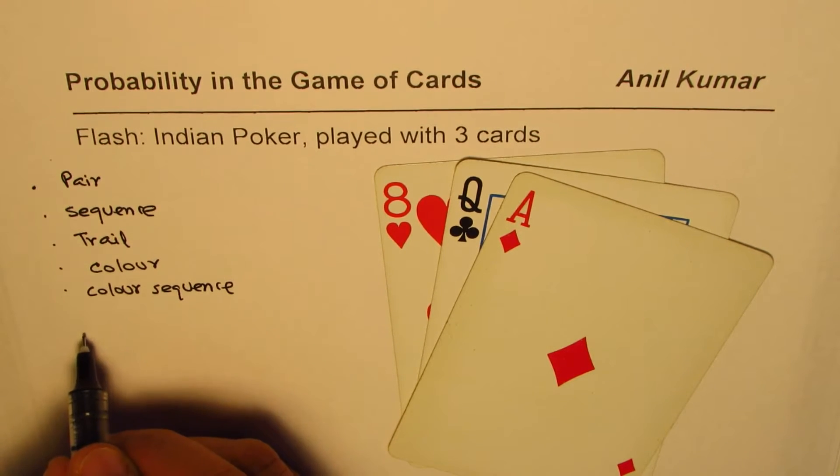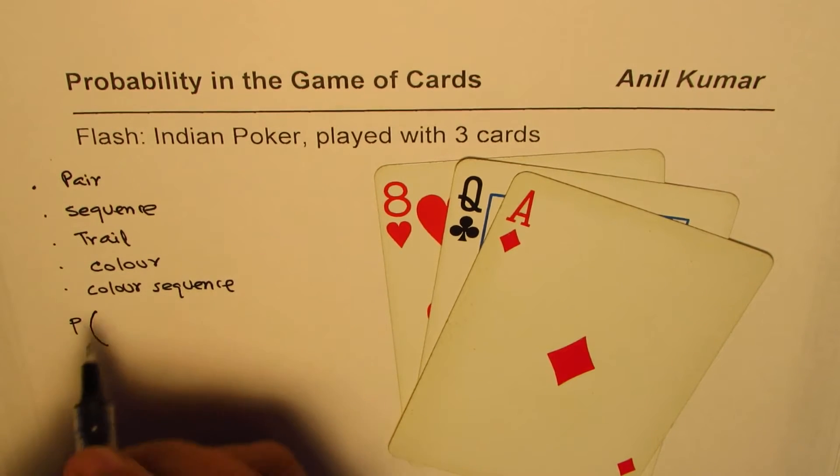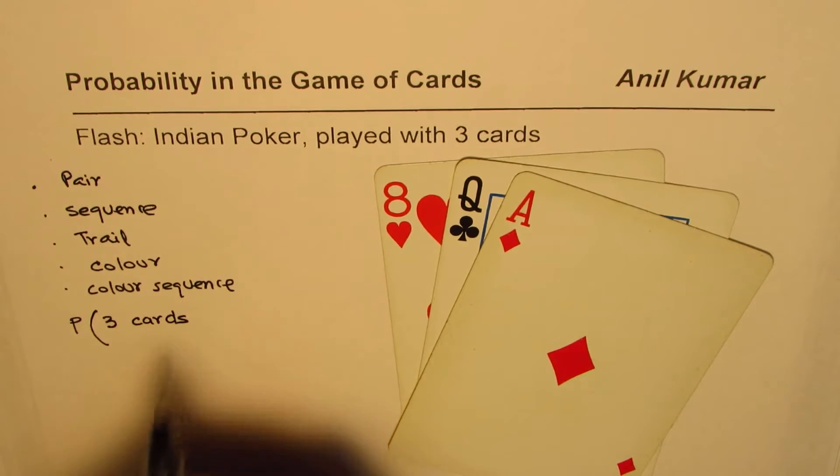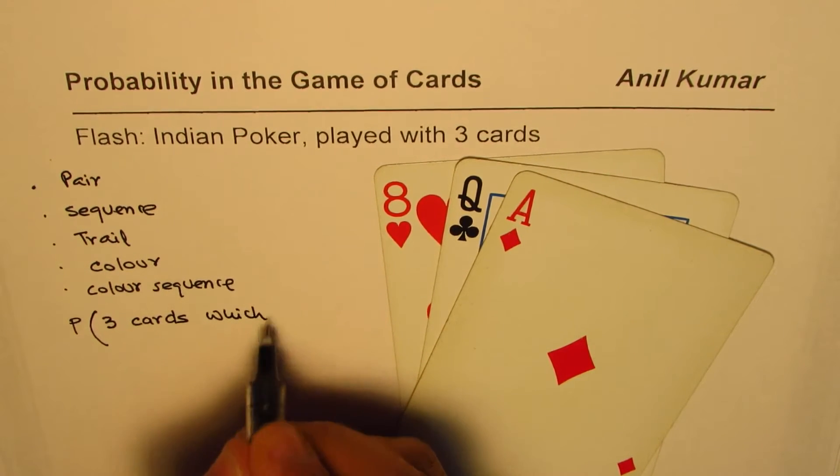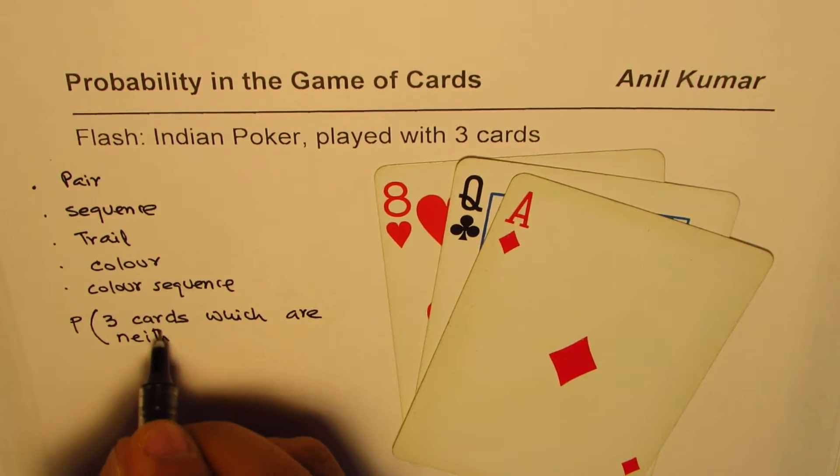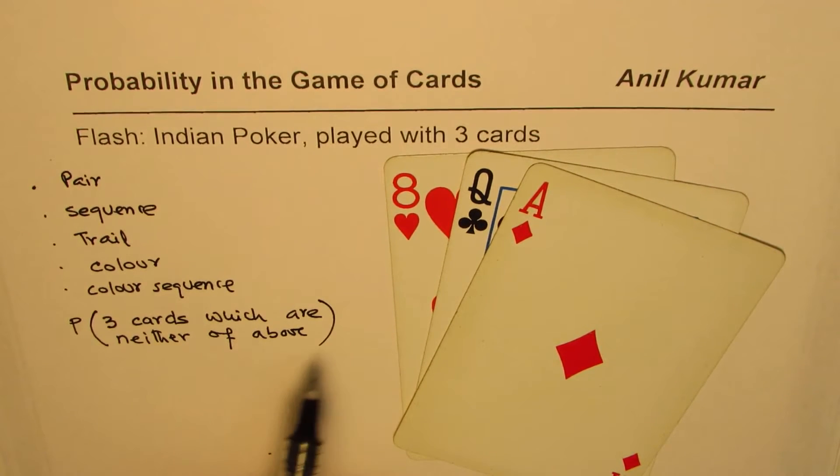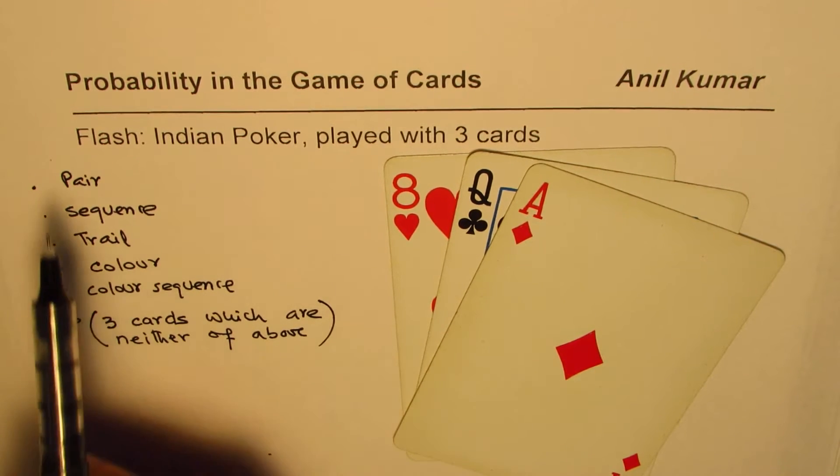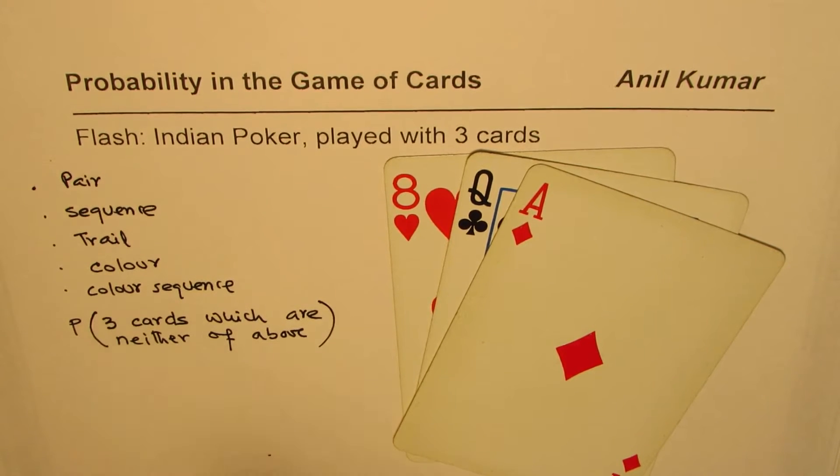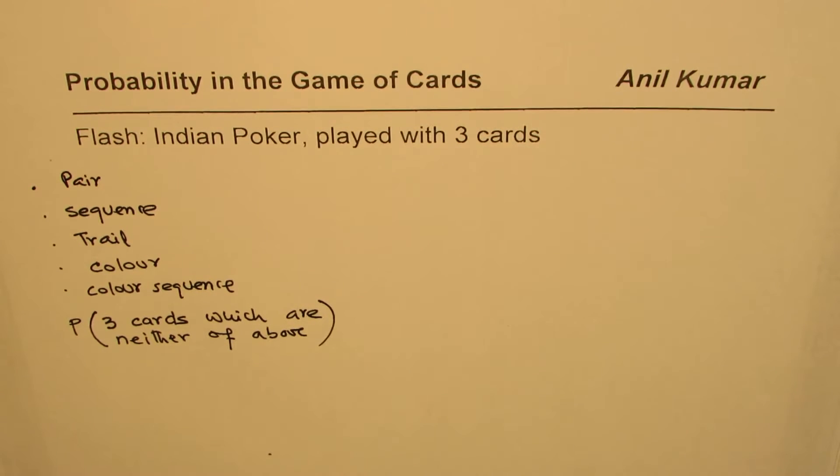That kind of combination comes in our hand most of the time. Let us try to figure out what is the probability of getting such a card when three cards are being distributed. So we're trying to find probability of three cards which are neither of above. That combination is not of a pair, not of a sequence, not of a trail, not of a color or color sequence.